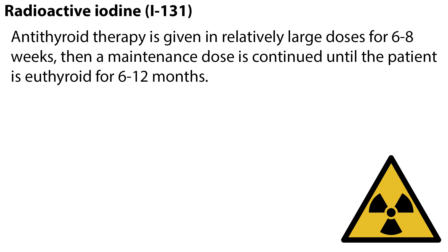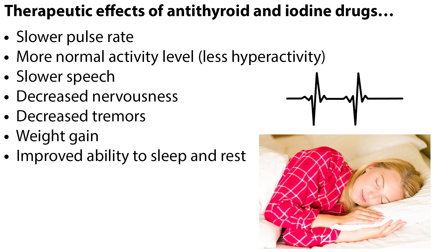Antithyroid therapy is given in relatively large doses for 6-8 weeks, then a maintenance dose is continued until the patient is euthyroid for 6-12 months. Therapeutic effects of antithyroid and iodine drugs include slower pulse rate, more normal activity level, less hyperactivity, slower speech, decreased nervousness, decreased tremors, weight gain, and improved ability to sleep and rest.